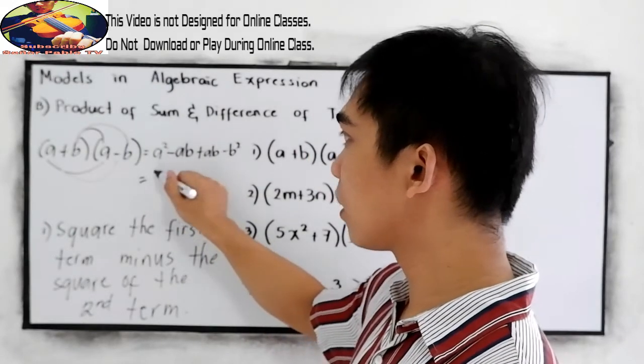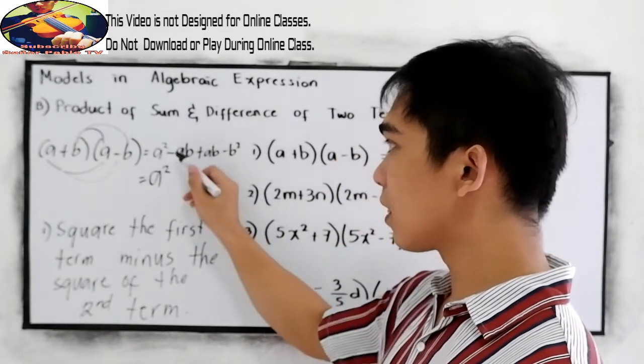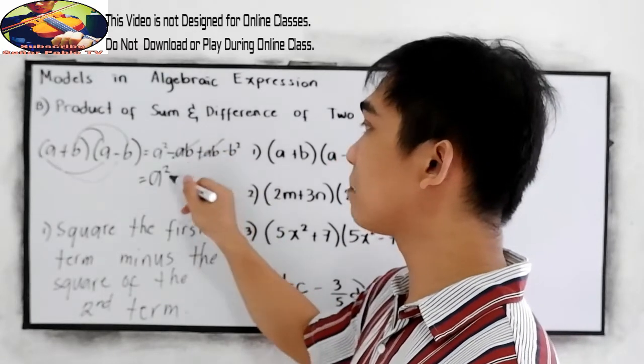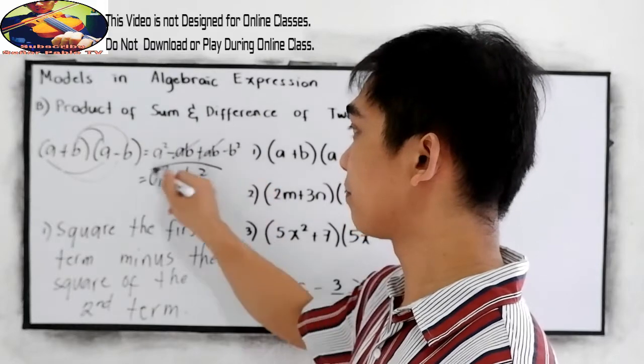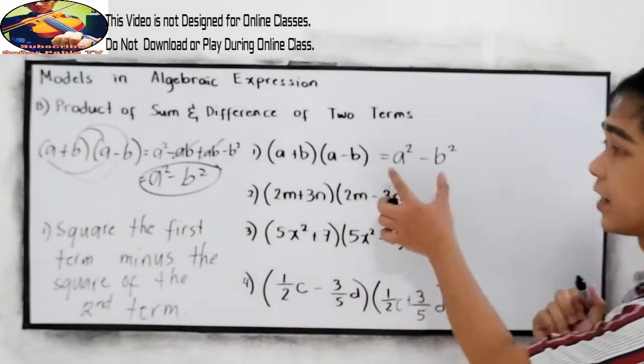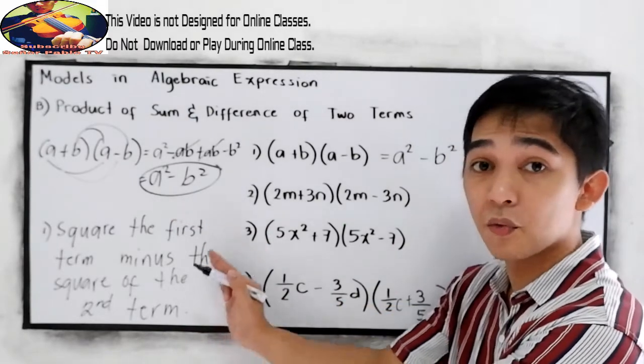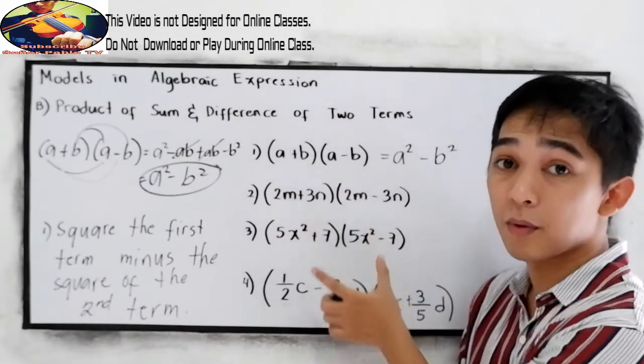So A squared, negative AB plus AB, that will give us zero. Then minus B squared. Are they the same? Yes. So memorize our shortcut if you will encounter this kind of problem.